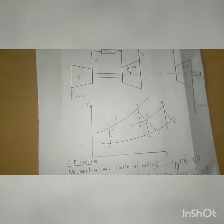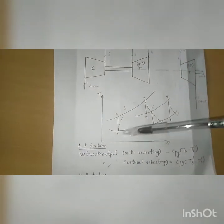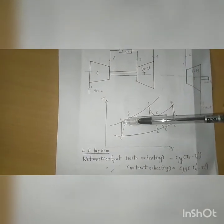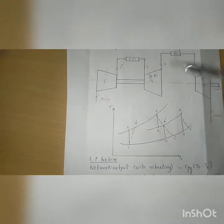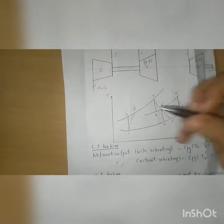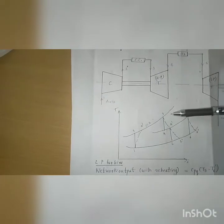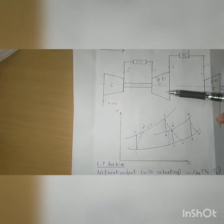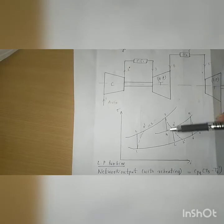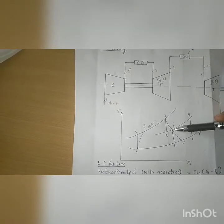This is the T-S diagram of the reheating section. From 1 to 2 it is compressed — 1 to 2 is ideal and 1 to 2 dash is actual. From 2 to 3 dash it is combustion chamber 1, where heat is added. From 3 to 4, the high pressure turbine expands — 3 to 4 is ideal and 3 to 4 dash is actual.